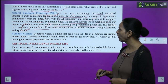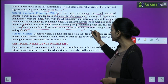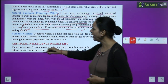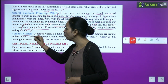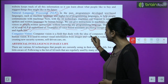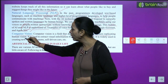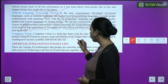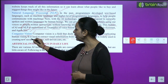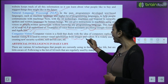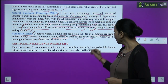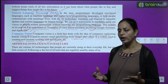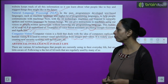Computer Vision. Computer vision is a field that deals with the idea of computers replicating human vision. It is used to extract visual information from images and videos. It is widely used in creating new security systems and self-driven cars.